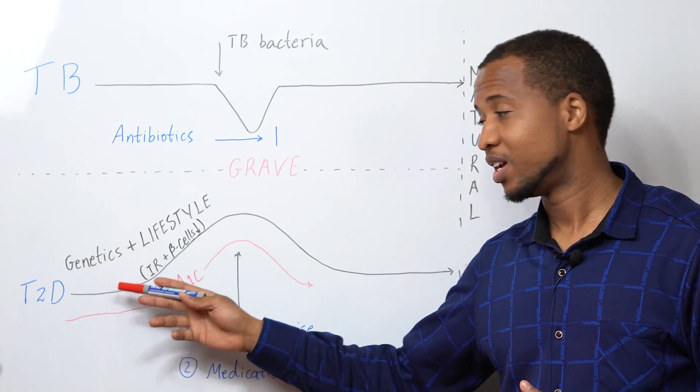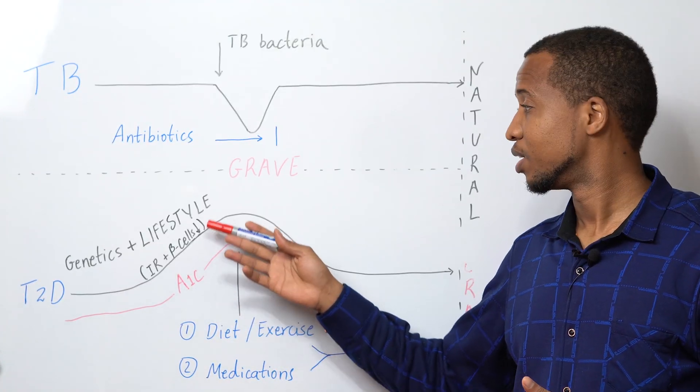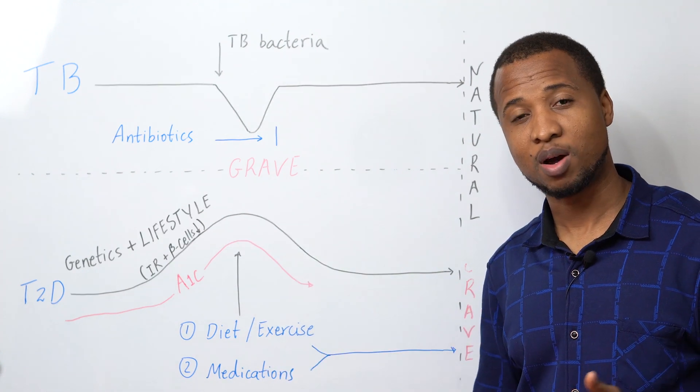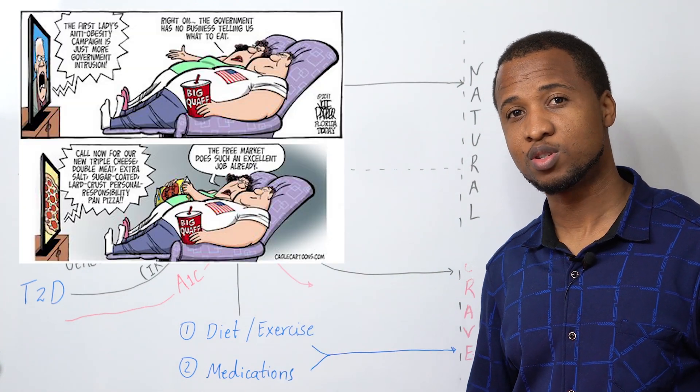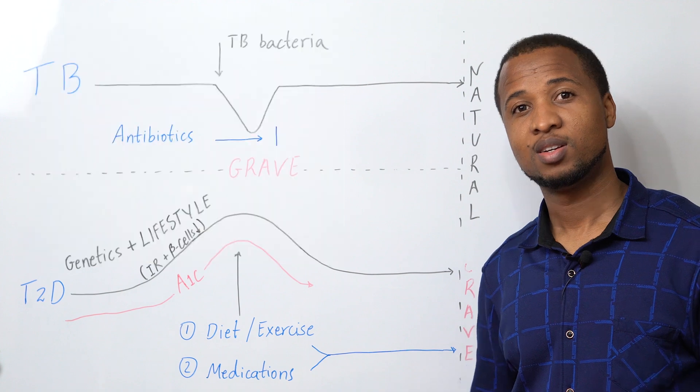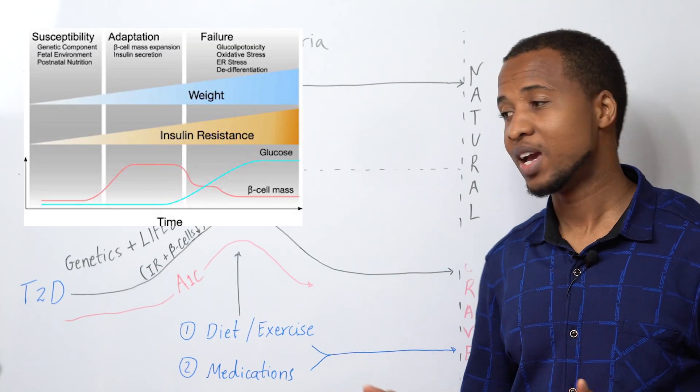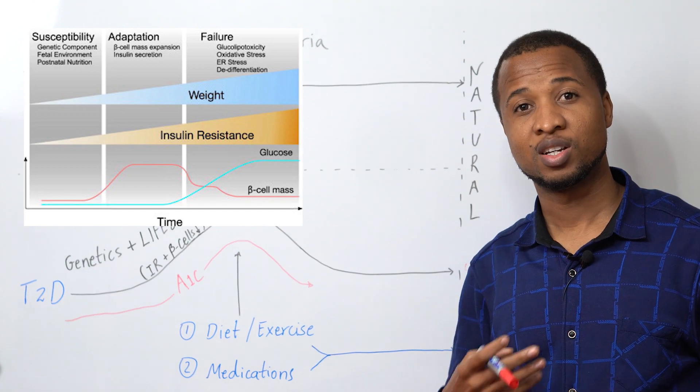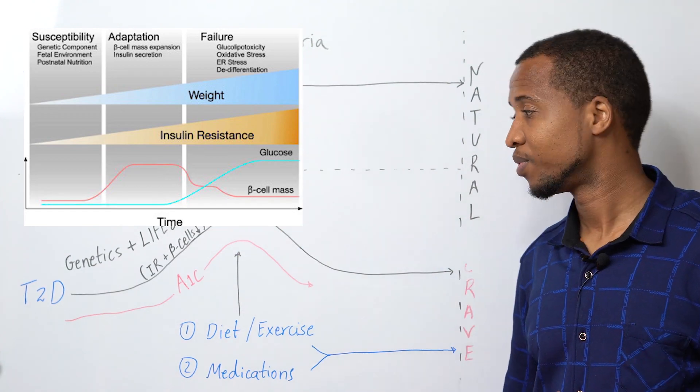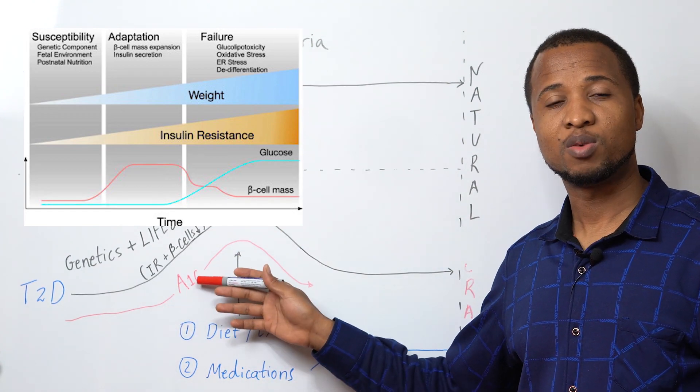Now, because of your genetics and your lifestyle - by lifestyle, I mean, probably many years of food abuse or couch abuse or some things like that, leading to insulin resistance and partial loss of beta cells, the cells that produce insulin. The sugar in your blood will start to rise.